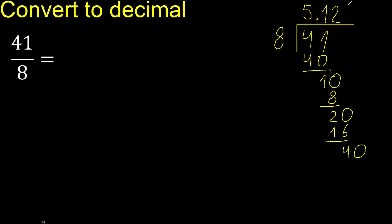Complete, 40. 8 multiplied by 5, 40. 40 minus 40, 0, 0. Therefore finish, finish.